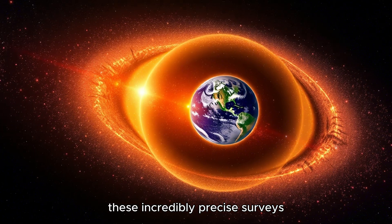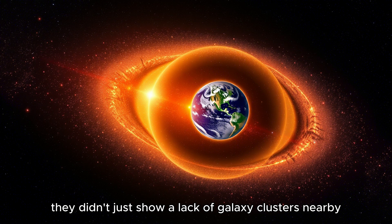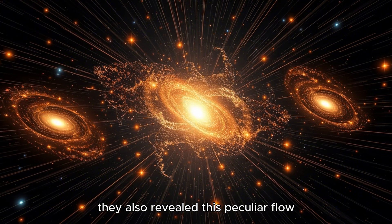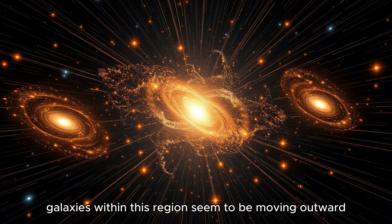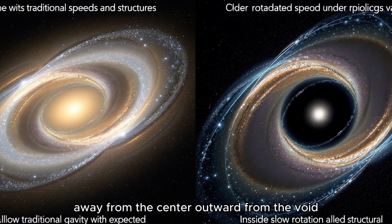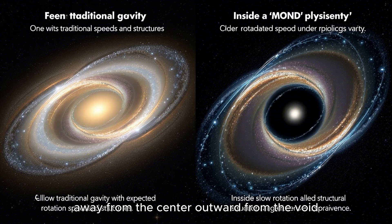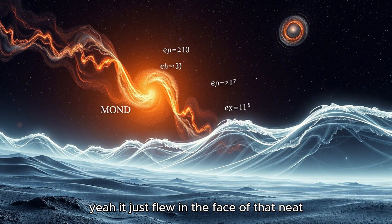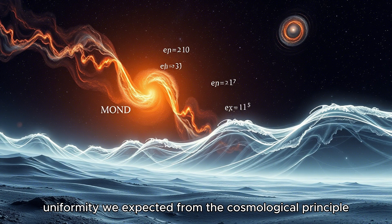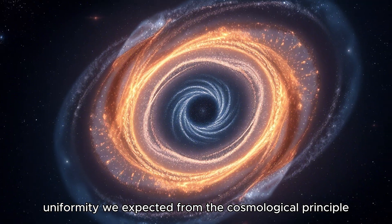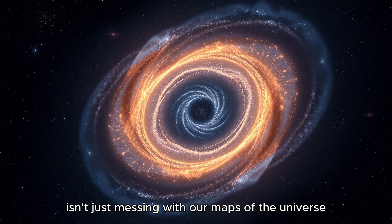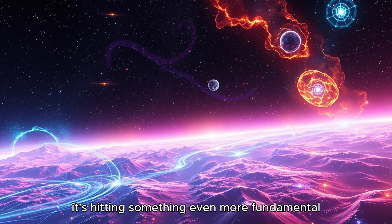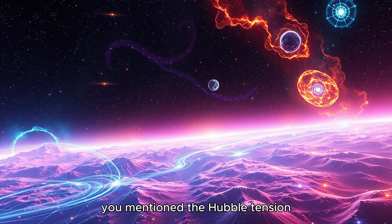These incredibly precise surveys didn't just show a lack of galaxy clusters nearby, which was strange enough. They also revealed this peculiar flow. Galaxies within this region seem to be moving outward, away from the center. Outward from the void. All pointing towards this enormous underdense area. It just flew in the face of that neat uniformity we expected from the cosmological principle. And it sounds like this void isn't just messing with our maps of the universe. It's hitting something even more fundamental, how we measure its expansion. You mentioned the Hubble tension.